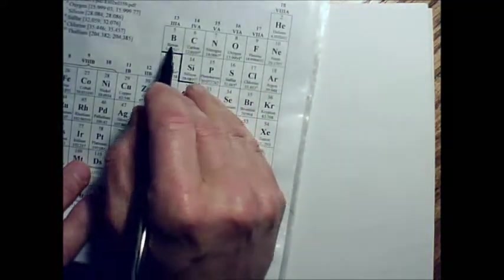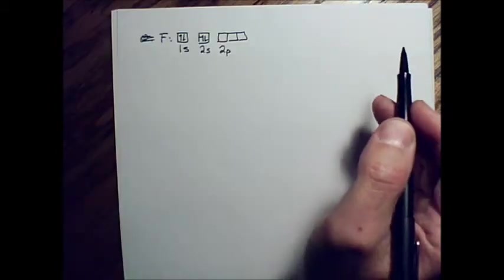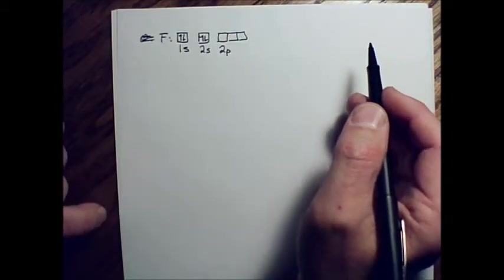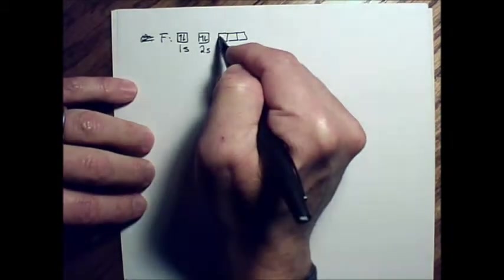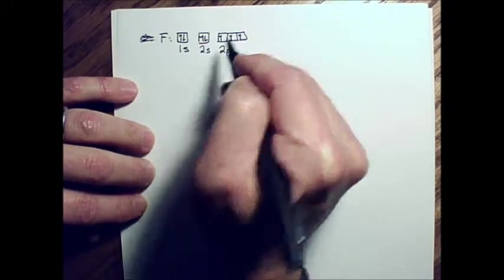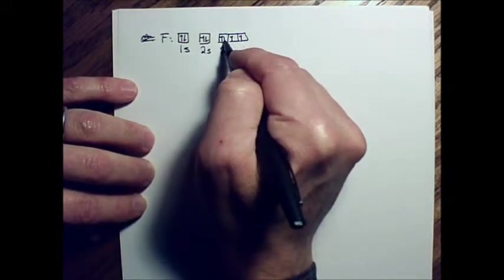And so for fluorine, we need 1, 2, 3, 4, 5 more electrons. And we're going to do that school bus rule now. One in each box, and then come back, pair them up. And there's fluorine.